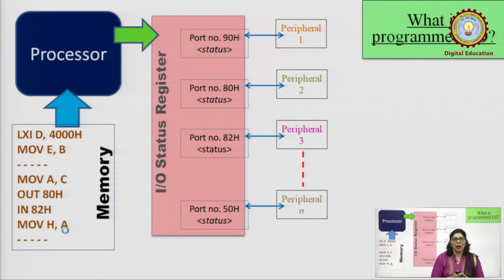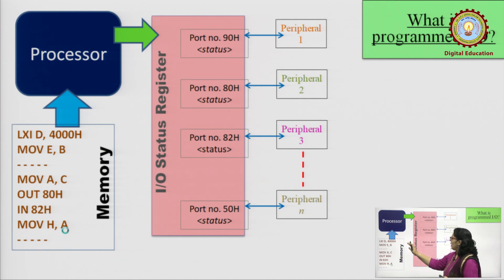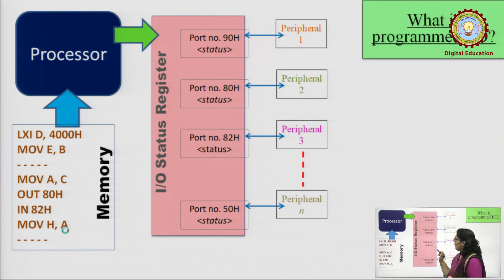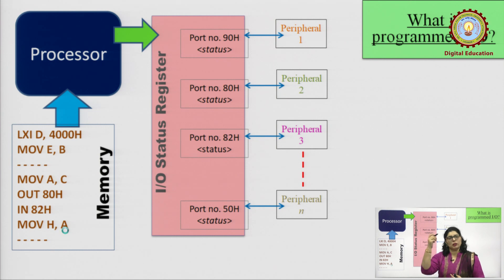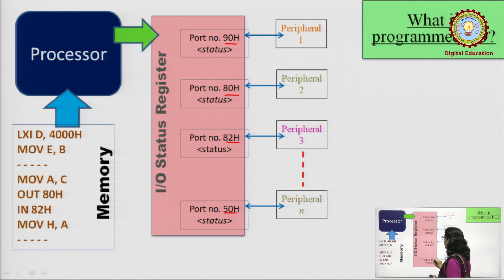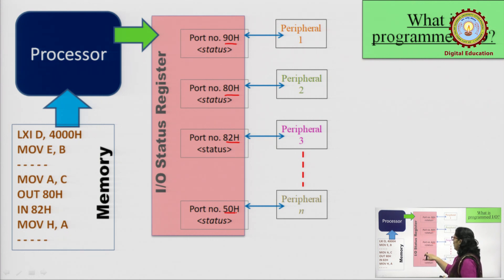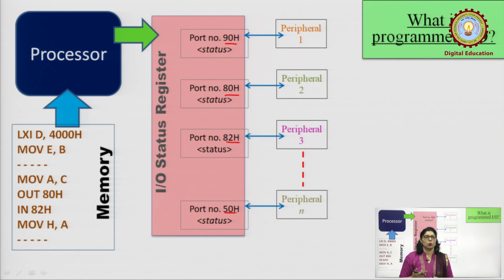What is happening behind this program? The processor will update all the contents to the I/O status register. In the I/O status register, I have mentioned four ports with their addresses — random addresses like 90H, 80H, 82H, 50H — all 8-bit port addresses. You can refer to the specification sheet of that particular processor for actual addresses. On each port, a peripheral is attached — peripheral 1, 2, and so on.